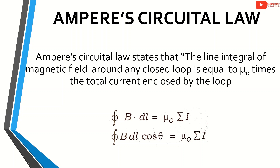Ampere's Circuital Law states that the line integral of magnetic field around any closed loop is equal to mu0 times the total current enclosed by the loop. Closed integral B dot dl is equal to mu0 sigma i, that is, closed integral B dl cos theta is equal to mu0 sigma i.